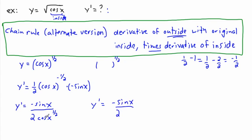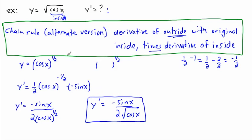Prettying it up: the answer is negative sine x over two times the square root of cosine x — being careful to put brackets so it's the square root of all of cosine x, not just x. This derivative gives the slope of the tangent line at any point. For example, plugging in pi radians gives minus sine pi over two times square root of cosine pi.